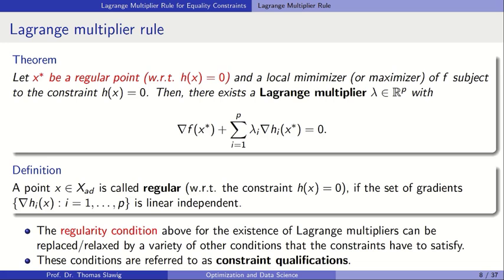Now the Lagrange multiplier rule. One additional assumption is needed: the point x* must be a regular point. If x* is a local minimizer of the constrained problem, then there exists a Lagrange multiplier such that gradient f plus the linear combination of Lagrange multipliers and gradients of the constraints equals zero. This is also valid for a maximizer, as it is a first order necessary condition — the same as gradient f equal to zero for unconstrained problems.